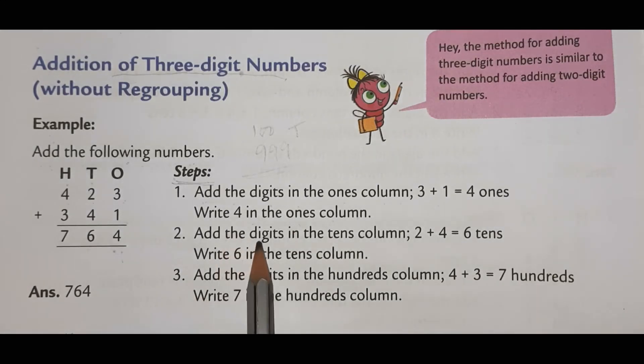Then, add the digit in the ten's column. This is ten's column. So, which numbers are there? 2 and 4. So, 4 plus 2, it is 6. And 6 means this is 6 tens.